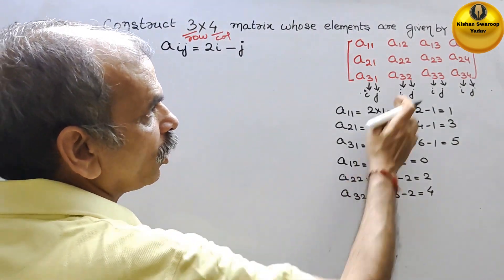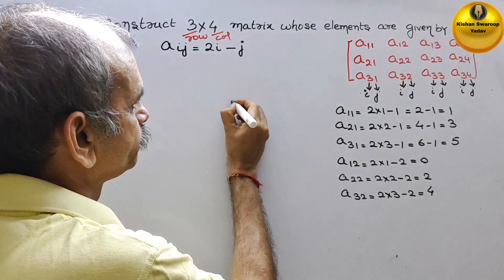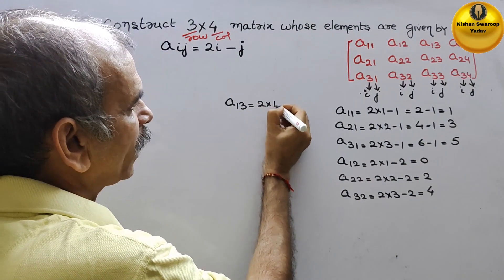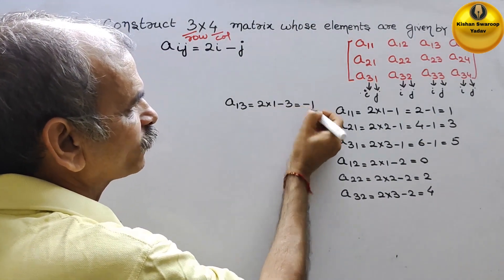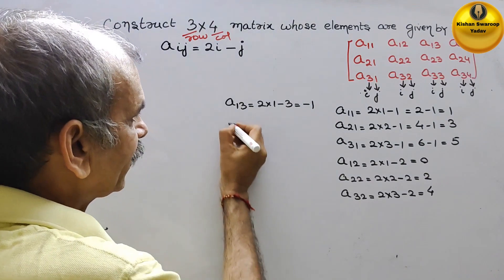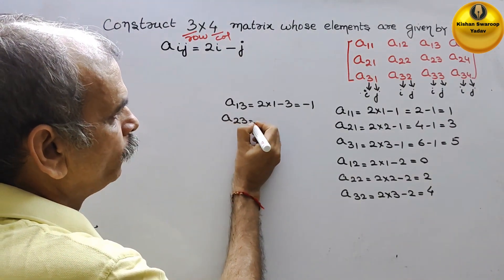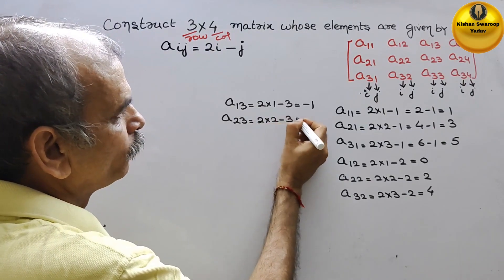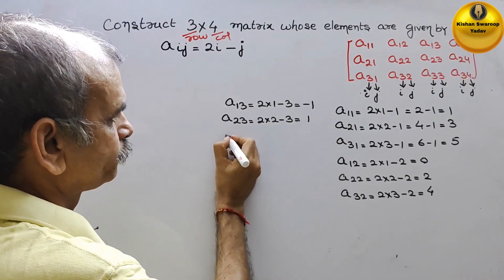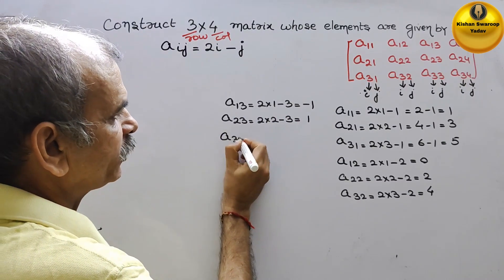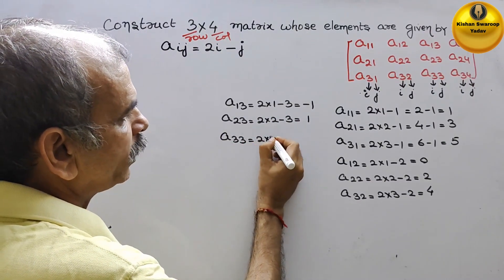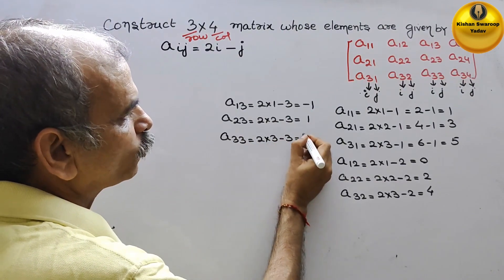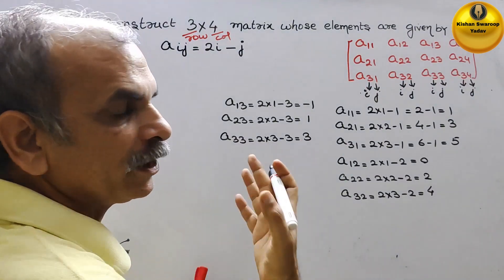Next is A(1,3): 2 into 1 minus 3, so that is minus 1. Next is A(2,3): 2 into 2 minus 3, so you will get 1. A(3,3): 2 into 3 minus 3 gives 6 minus 3, that is equal to 3.